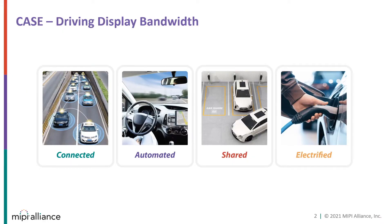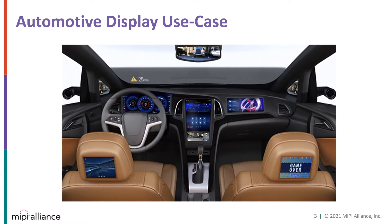CASE is a new acronym driving display bandwidth: Connected, Automated, Shared, Electrified. Connected cars use advanced LTE and 5G networks to increase network bandwidth and drive higher resolution displays. Automated driving assistance allows passengers more time to use higher resolution and more plentiful displays. Ride sharing is a natural consequence of automation and provides more opportunities for passenger viewing time. Finally, electrification requires lower power, light, and efficient displays. CASE allows the modern automotive cabin to support a growing number of displays that are larger and higher in resolution and refresh rate.